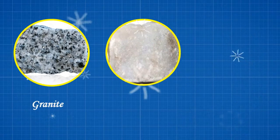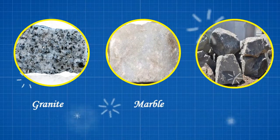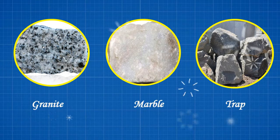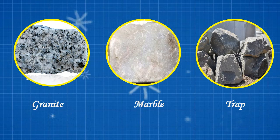The examples of unstratified rocks are granite, marble, trap, etc.